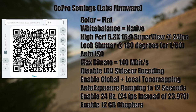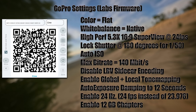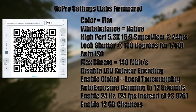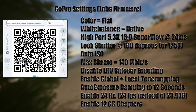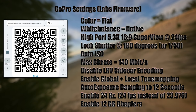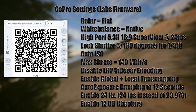We're going to enable Global plus Local Tone Mapping, which increases dynamic range beyond what the flat color profile alone provides and adds detail in small contrast areas — like being able to see leaves in trees more clearly. We're also setting auto exposure damping to 12 seconds, though there's currently a firmware bug where this setting only works on the first recording after being set and then reverts to the default one second.